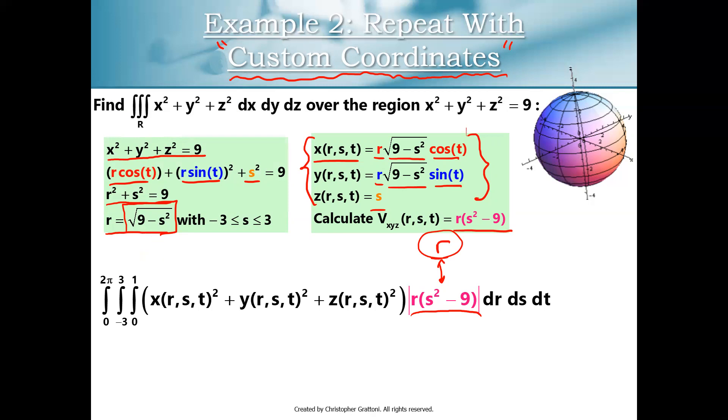And the version that we have here, instead we've got a really nice set of limits of integration. In fact, we have a coordinate system where we are integrating over a rectangular prism system in RST space, but we have a more complicated Jacobian determinant. And that's really just a matter of preference, which version you want to do. You're going to get the same answer.